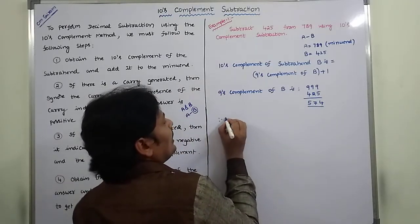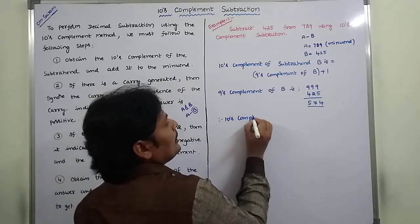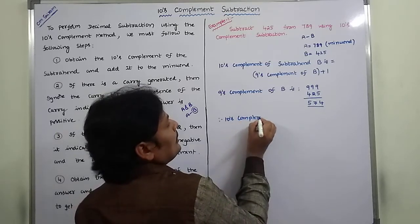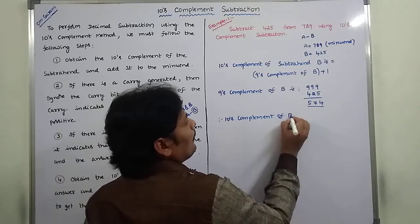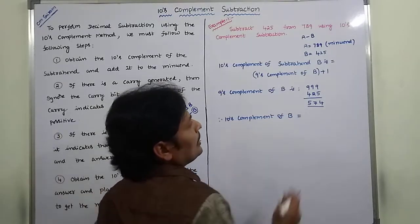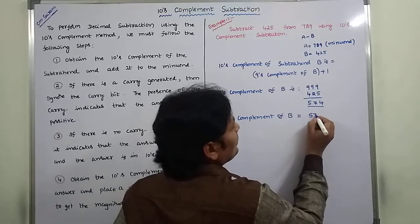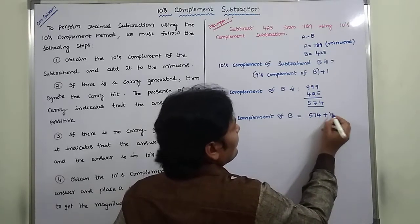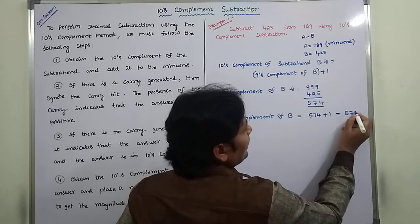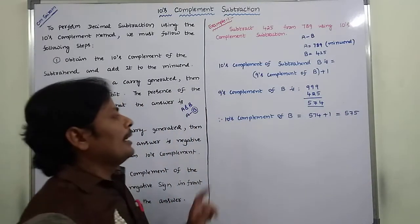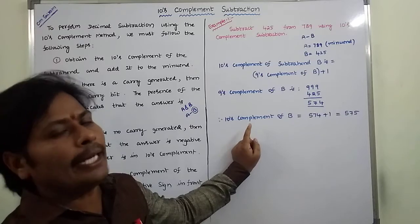Therefore, tense complement of B equals nice complement plus 1, which is 574 plus 1, that is equal to 575. This is the tense complement of the subtrahend B.